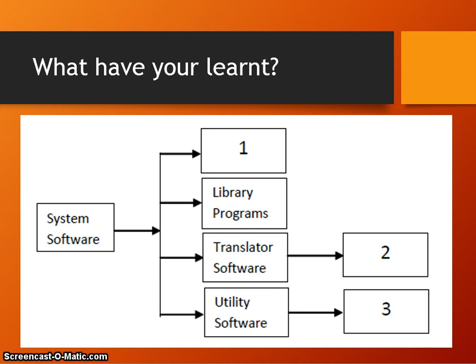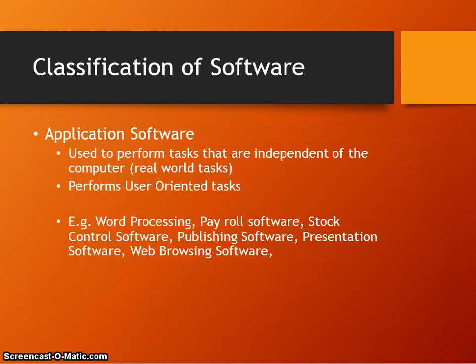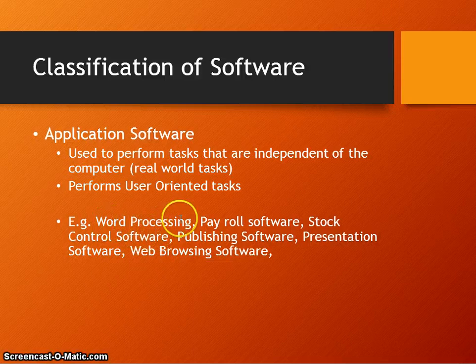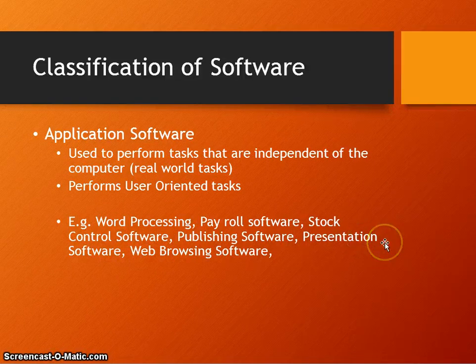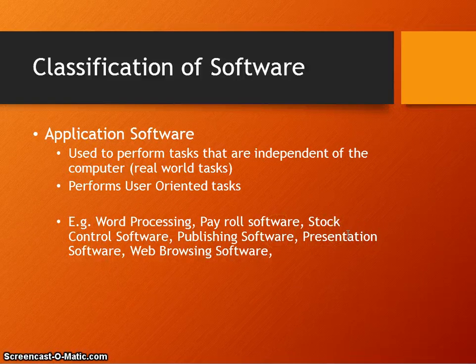That is a summary of system software. Application software can be split into three distinct categories. Application software is used to perform tasks that are independent of the computer — real-world tasks. Looking at the types, we have general purpose applications: word processors, presentation software, spreadsheets, and publishing software. These are used for many purposes — general purpose.